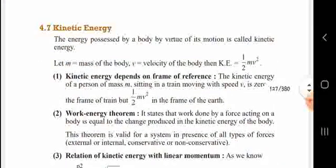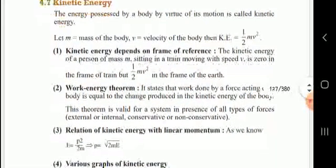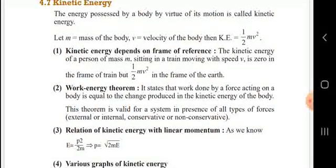Next, kinetic energy. The energy possessed by a body by virtue of its motion is called kinetic energy. The energy possessed equal to its motion is kinetic energy, and the formula for it is K = ½mv². Kinetic energy depends on the frame of reference.